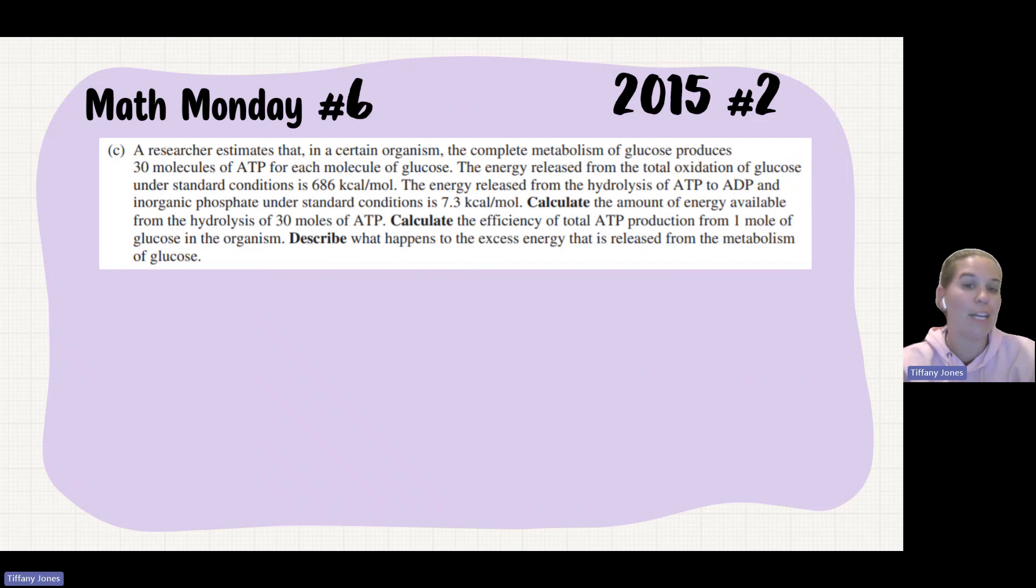A researcher estimates that in a certain organism, the complete metabolism of glucose produces 30 molecules of ATP for each molecule of glucose. The energy released from the total oxidation of glucose under standard conditions is 686 kilocalories per mole. The energy released from the hydrolysis of ATP to ADP and inorganic phosphate under standard conditions is 7.3 kilocalories per mole.